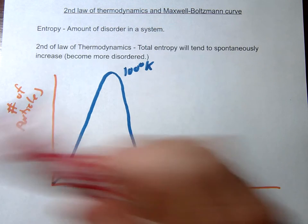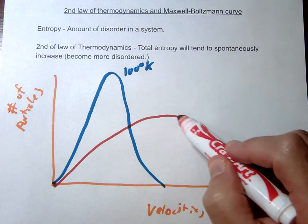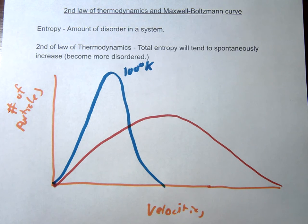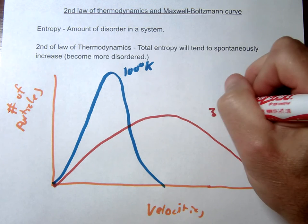Let's go ahead and say we have another substance that's 300 degrees. So the curve for this would look maybe something like this. Assuming that you have the same amount of particles, the areas of these two should be the same. So let's say this is 300 degrees.